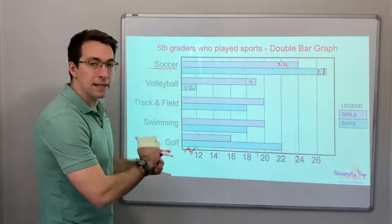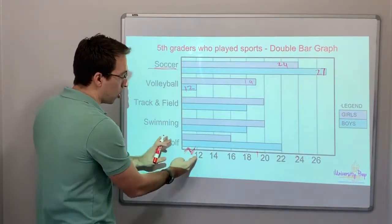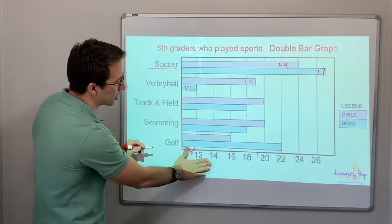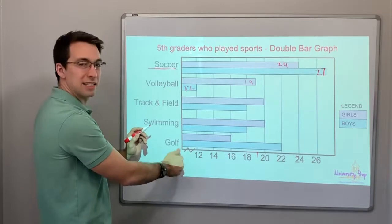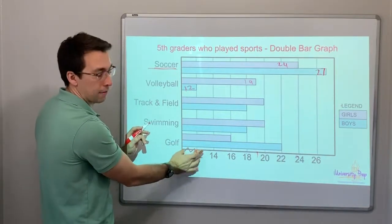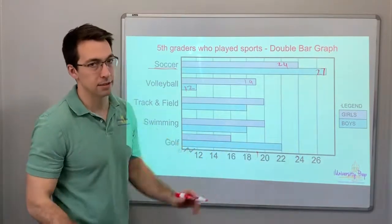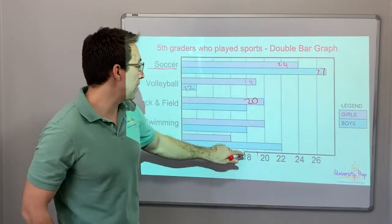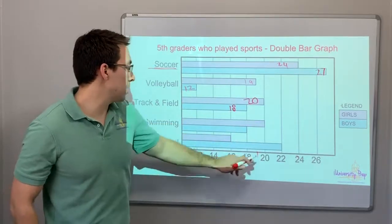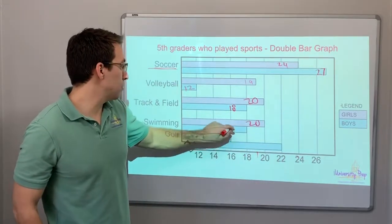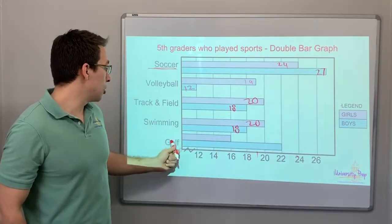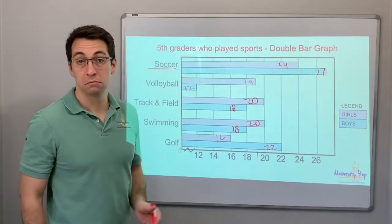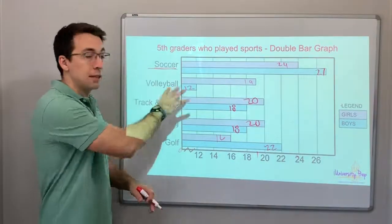To save space, sometimes bar graphs won't show all the way to zero. If you have this squiggly, it means the scale is skipping from 0 to 12, and then it's consistent from there. Track and field: 20 girls, 18 boys. Swimming: 20 girls, 18 boys. Golf: 22 boys and 16 girls play golf.